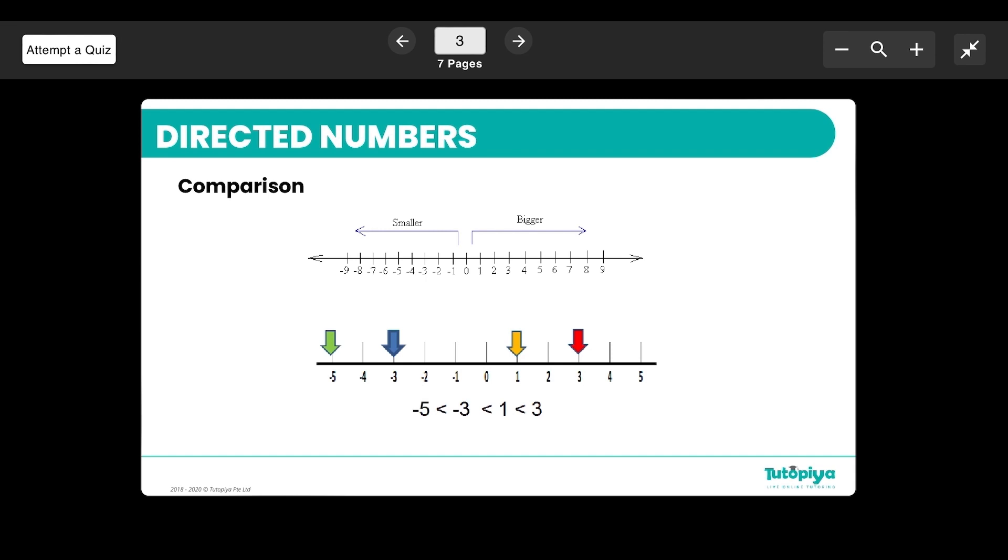For directed numbers, one of the important things we need to know is the ability to compare. There are positive directed numbers and negative ones, and you can see if I put it on a timeline, you should be able to put it on a basic timeline.